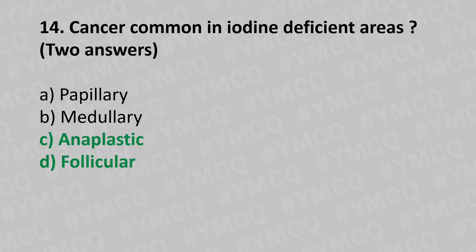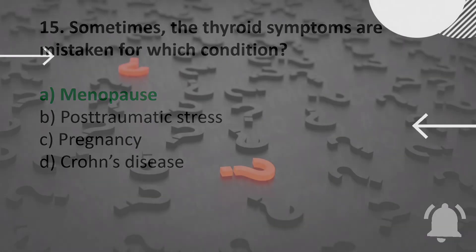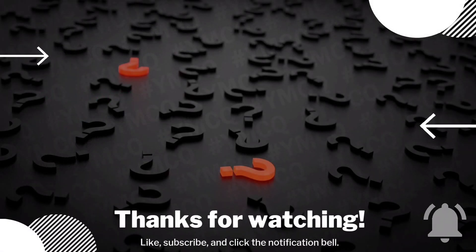Now let's move to question number fifty. Sometimes thyroid symptoms are mistaken for which condition? Option A - menopause, option B - post-traumatic stress, option C - pregnancy, option D - Crohn's disease. The answer is option A - menopause.